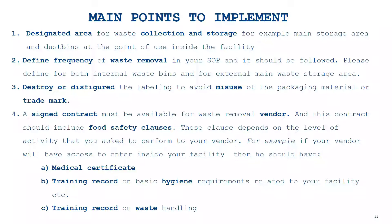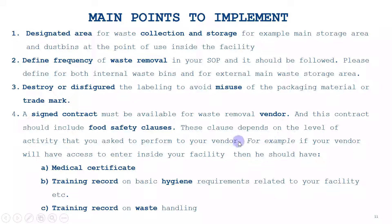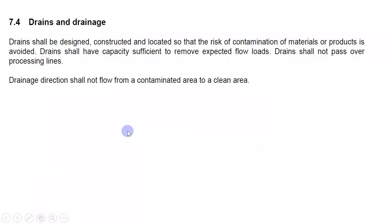The clauses required in the vendor contract depend on the type of food or your processing activities. If the vendor only handles waste outside the premises, fewer requirements may be needed. But if the vendor goes inside your premises, then at minimum they should have a medical certificate, be trained on basic hygiene requirements for the areas they access, and have training records on waste handling. These are the minimum requirements for clause 7.3.